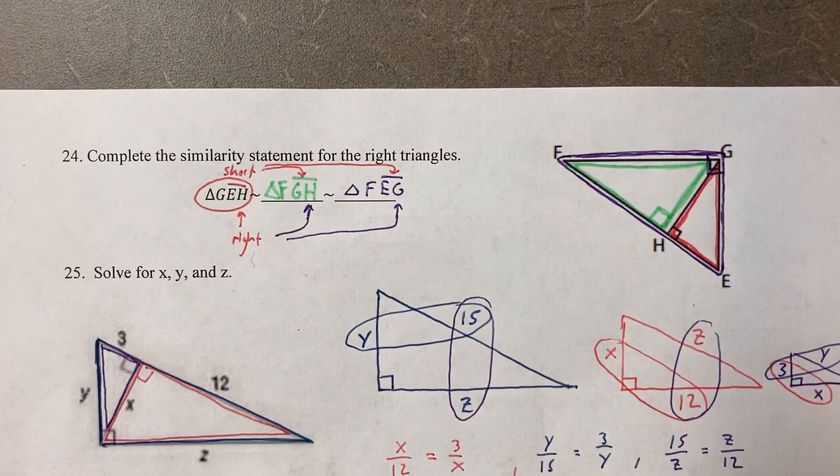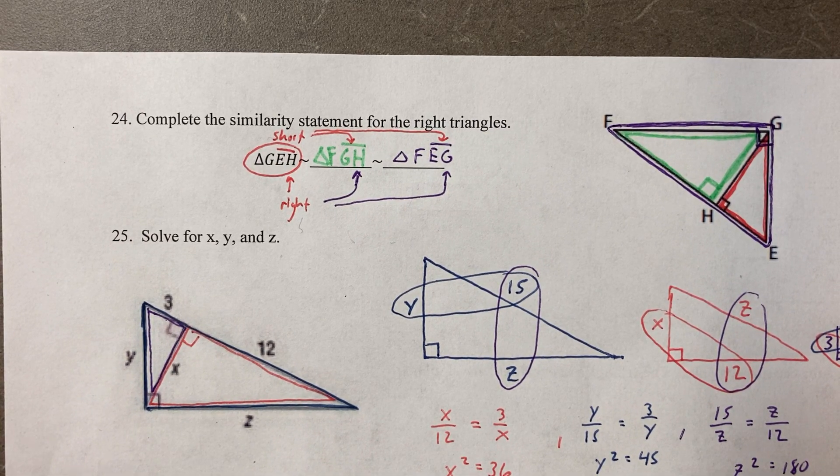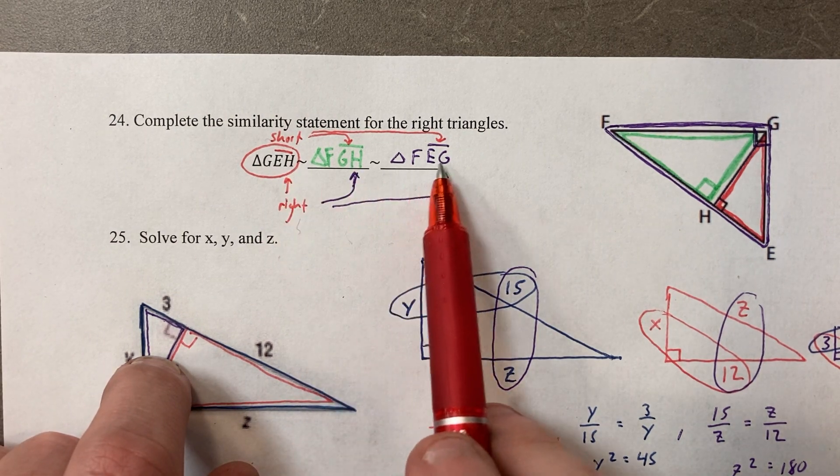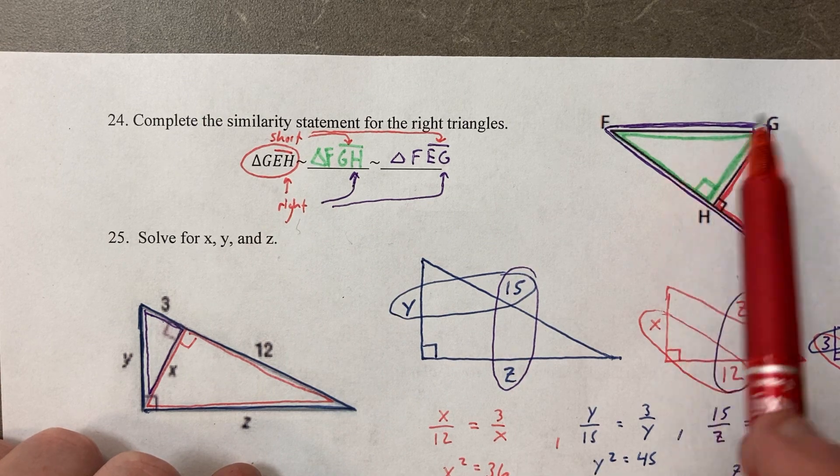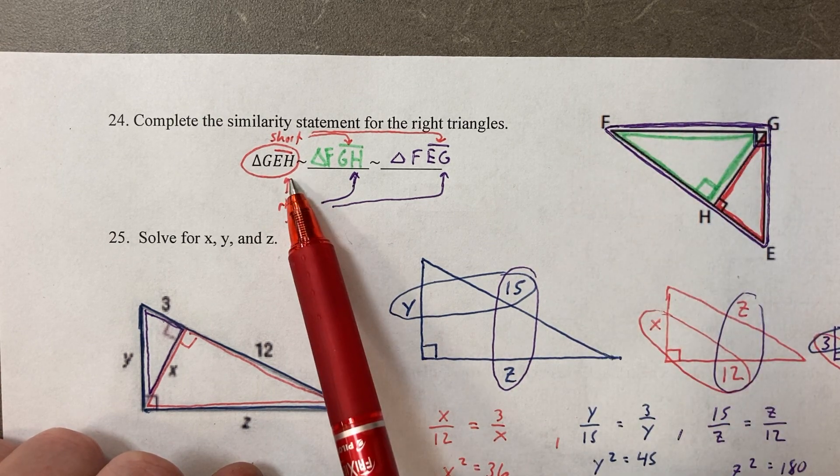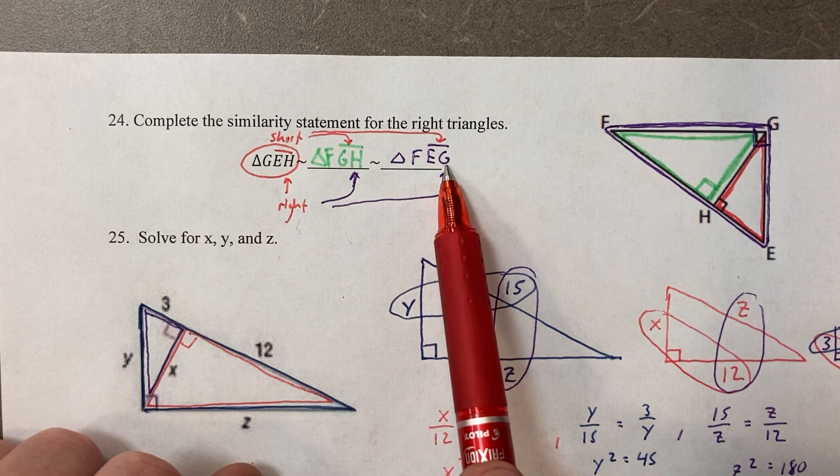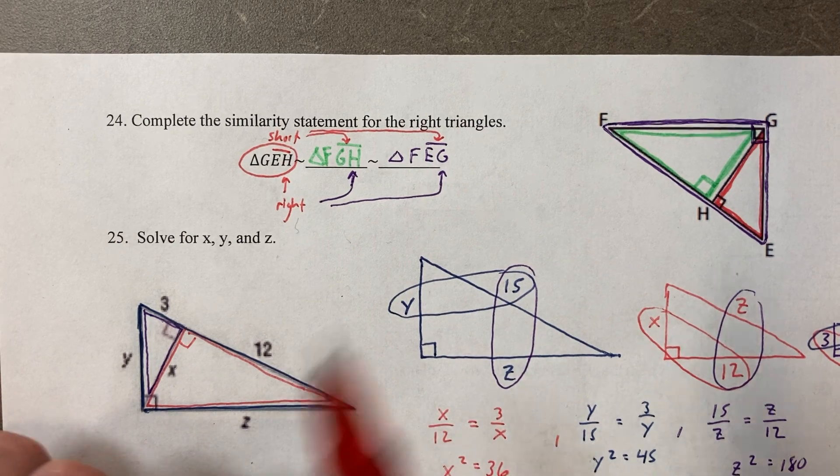Backside. I did go over these in class. Just be very careful how you match things up. I matched up the right angle. I separated them out. I got a red triangle, green triangle, purple triangle. I got a red right angle, green right angle, purple right angle. I got a red short leg, a green short leg, and a purple short leg.